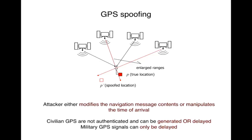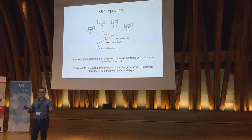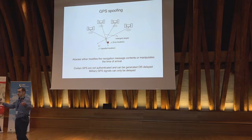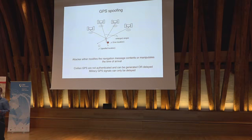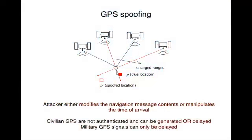How do you spoof? You can either modify the navigation signal message content or manipulate the time of arrival. The content, such as satellite positions, can be protected by digital signatures. But time of arrival is far more interesting because unlike content, we can't protect it with digital signatures. I don't care what bits the message carries — I care about when it arrives. If this is shifted, there's no cryptographic mechanism to detect that time delay.